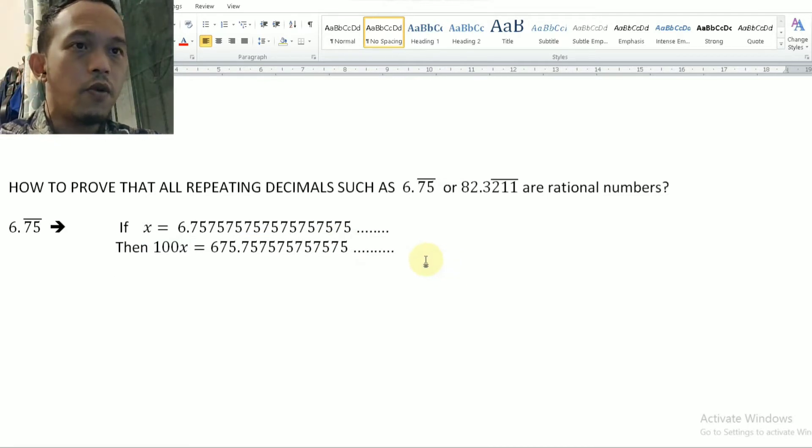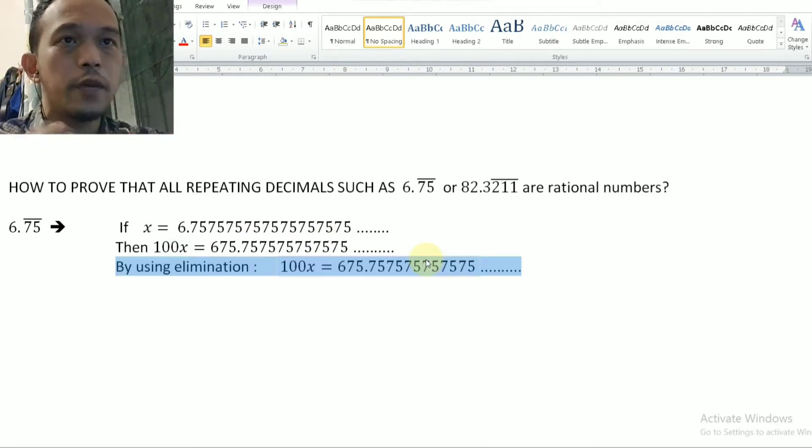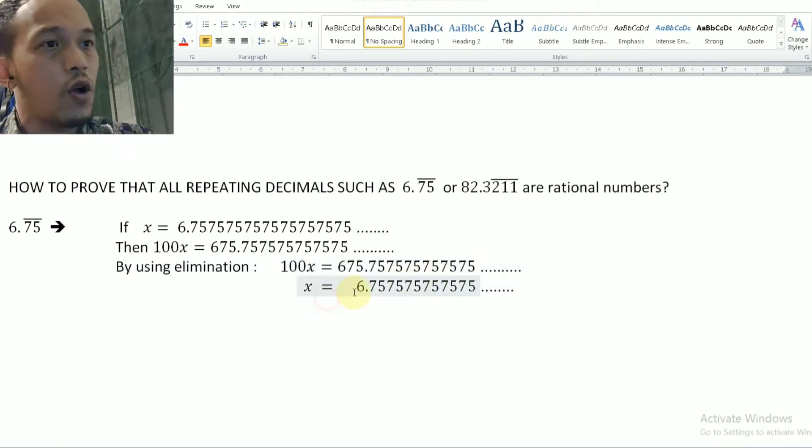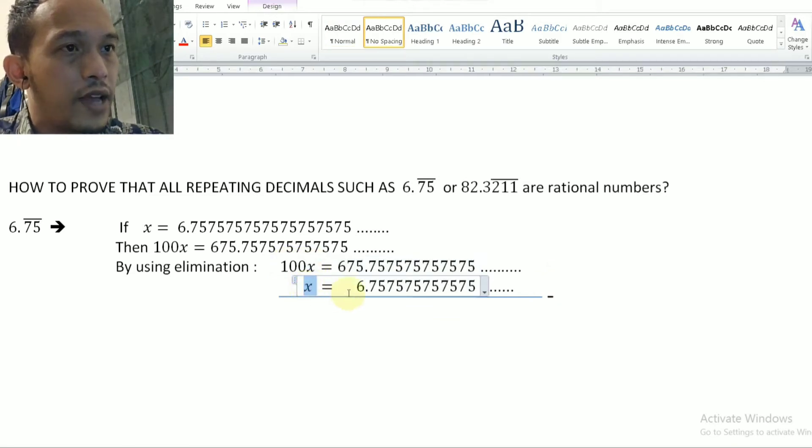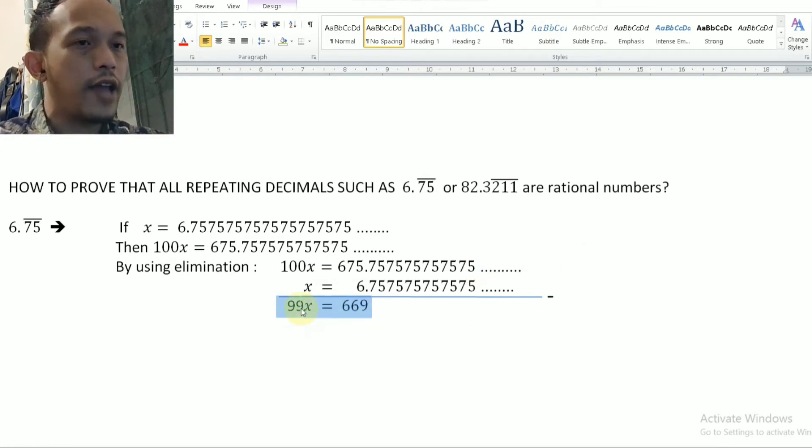And then, from these two equations, I do the elimination. You know that elimination, right? You have learned that before. So by eliminating these two equations, subtraction here. So I subtract this by this on the left side, on the right side, I subtract this by this. You can see that since the digits after decimals are exactly the same, it will be gone. So after I subtract that, I will have this statement, this equation.